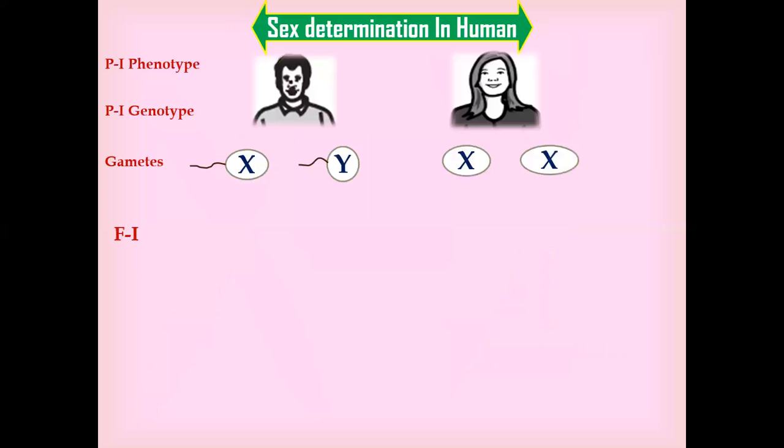We're going to see the monohybrid cross for sex determination in humans. For example, the parent one phenotype: the male contains X and Y sex chromosomes, while the female contains X and X sex chromosomes.